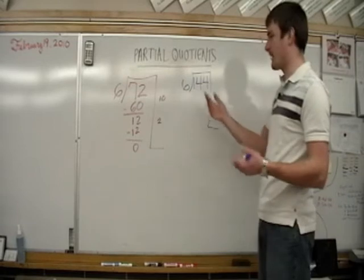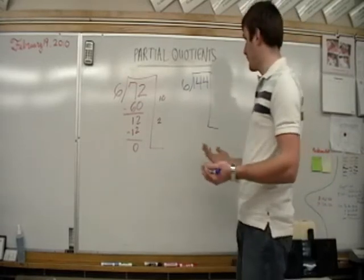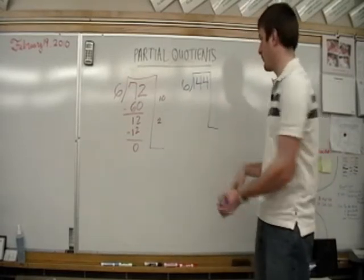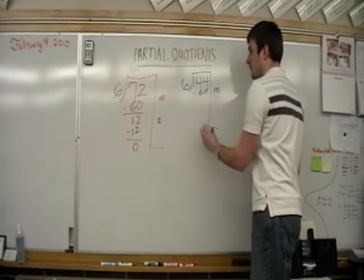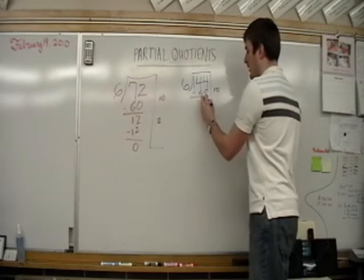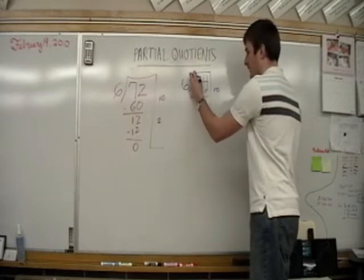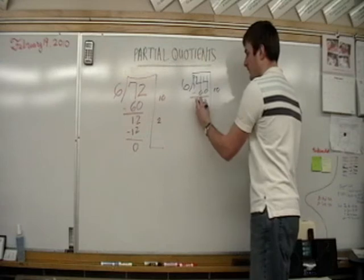So again, 10 or 100. Well, 6 times 10 is 60. 6 times 100 is 600. That's way too many. So let's just start with 10. 6 times 10 is 60. Subtract it. Again, just like we did right here. We have 4, 14 minus 6 is 8.